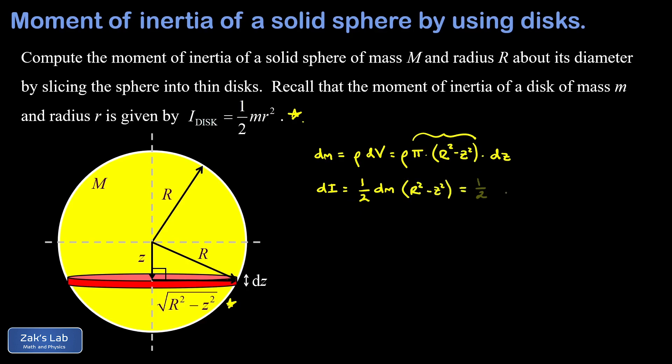So we just sub in our dm there and I get one half rho times pi times r squared minus z squared dz. Remember that was part of dm and then this leftover piece r squared minus z squared that was there from our moment of inertia of disk formula.